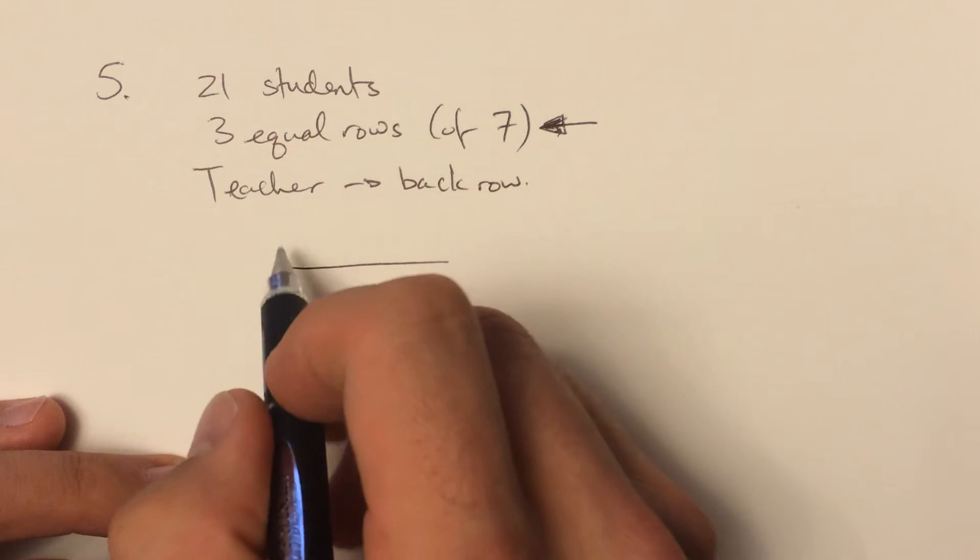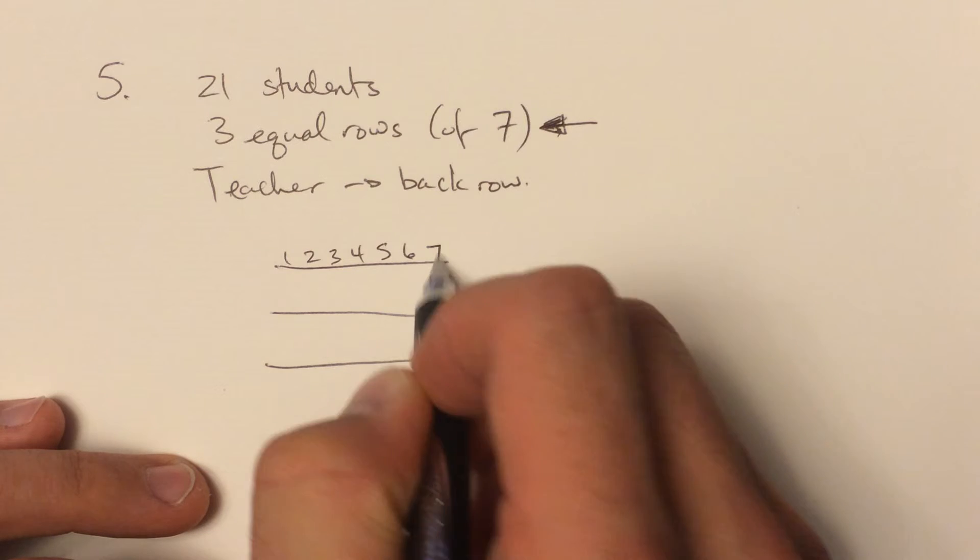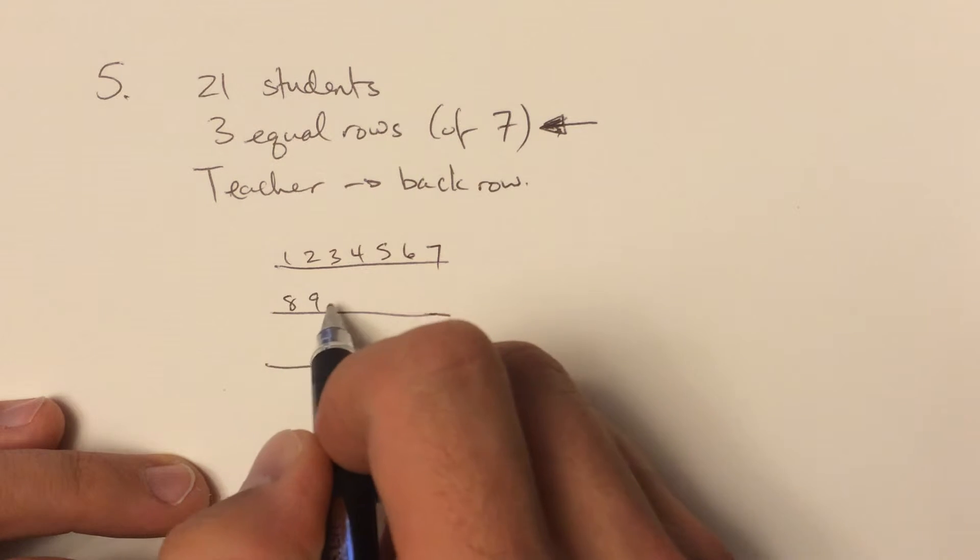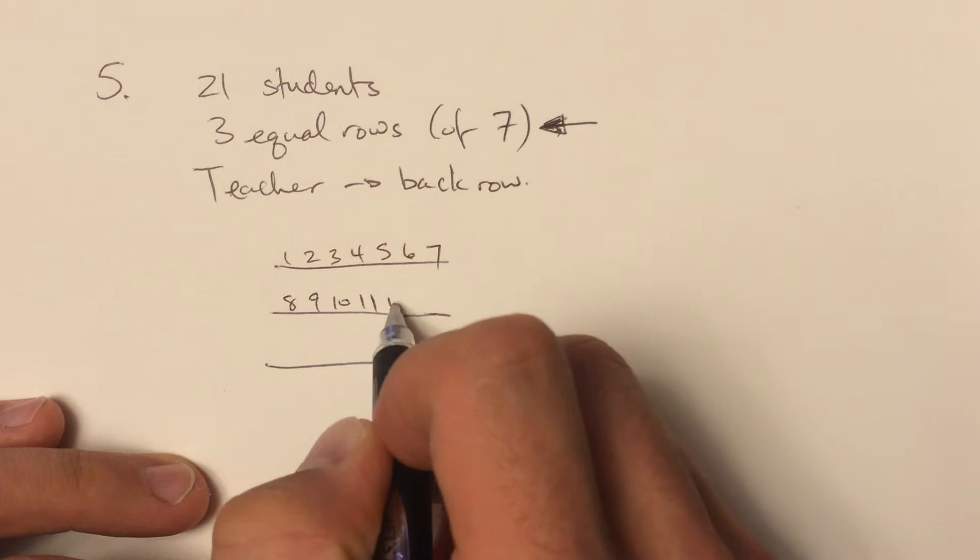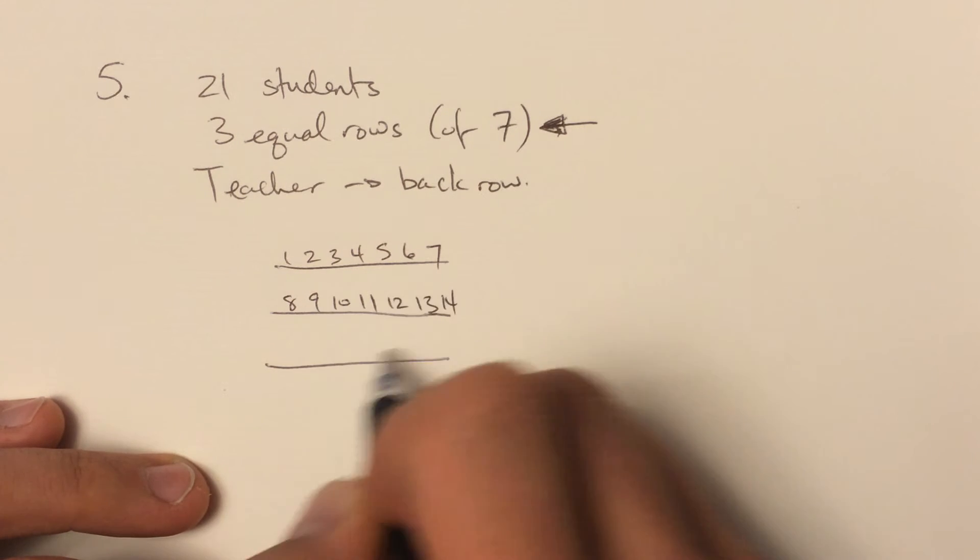Those three rows, each of them has seven positions. That's true. But in total, there are still 21 positions. You could, thinking about this, number all of the positions throughout the whole picture.